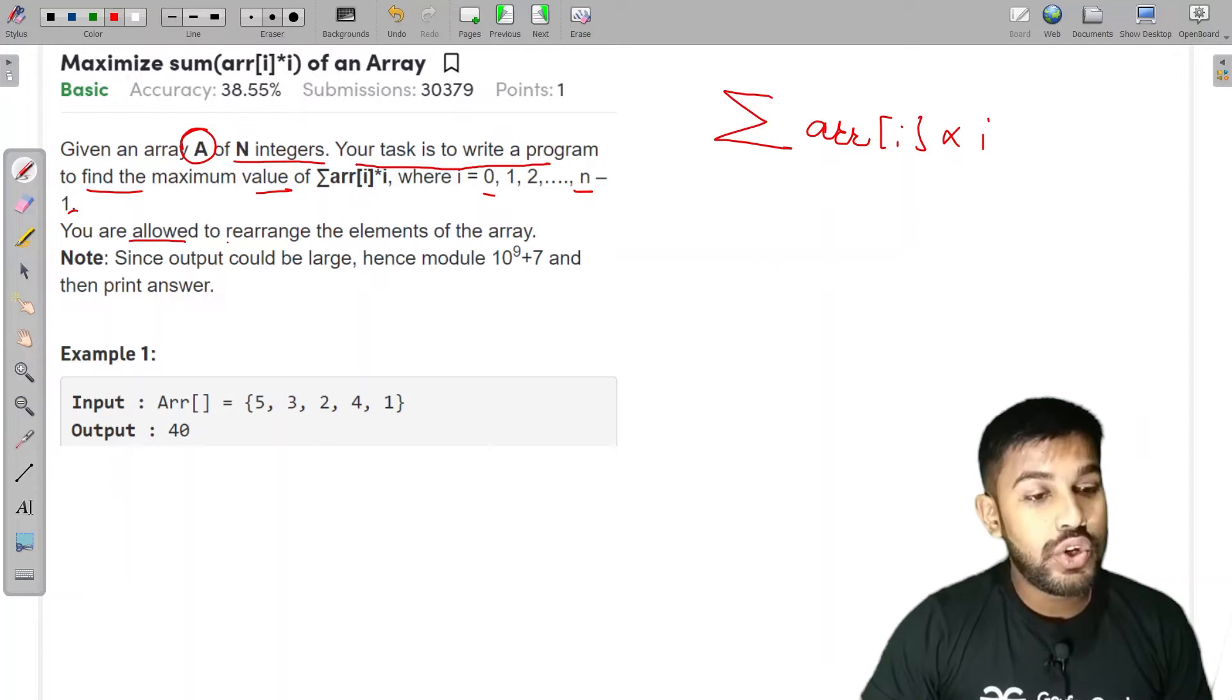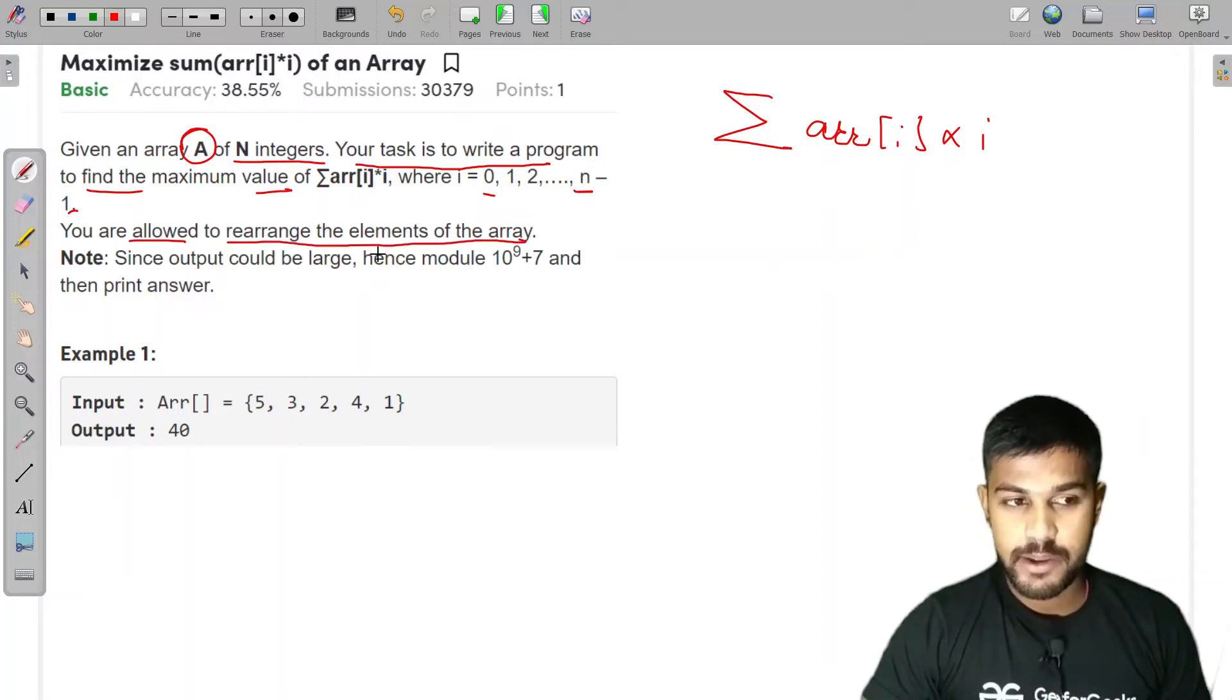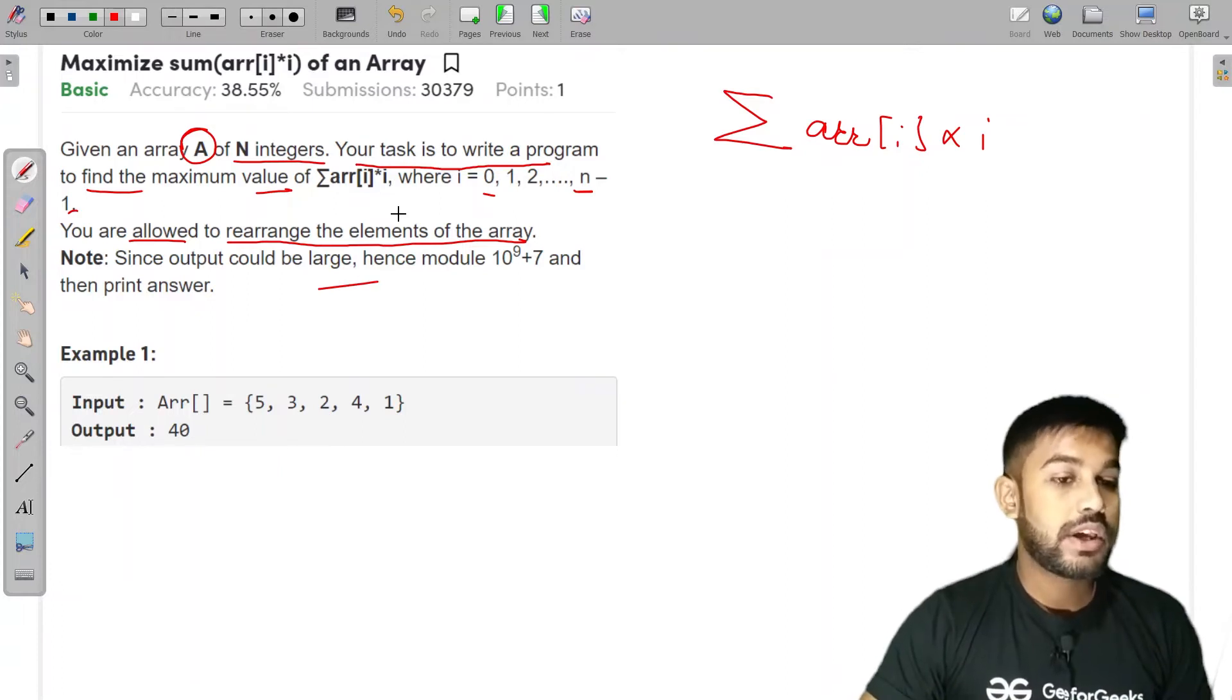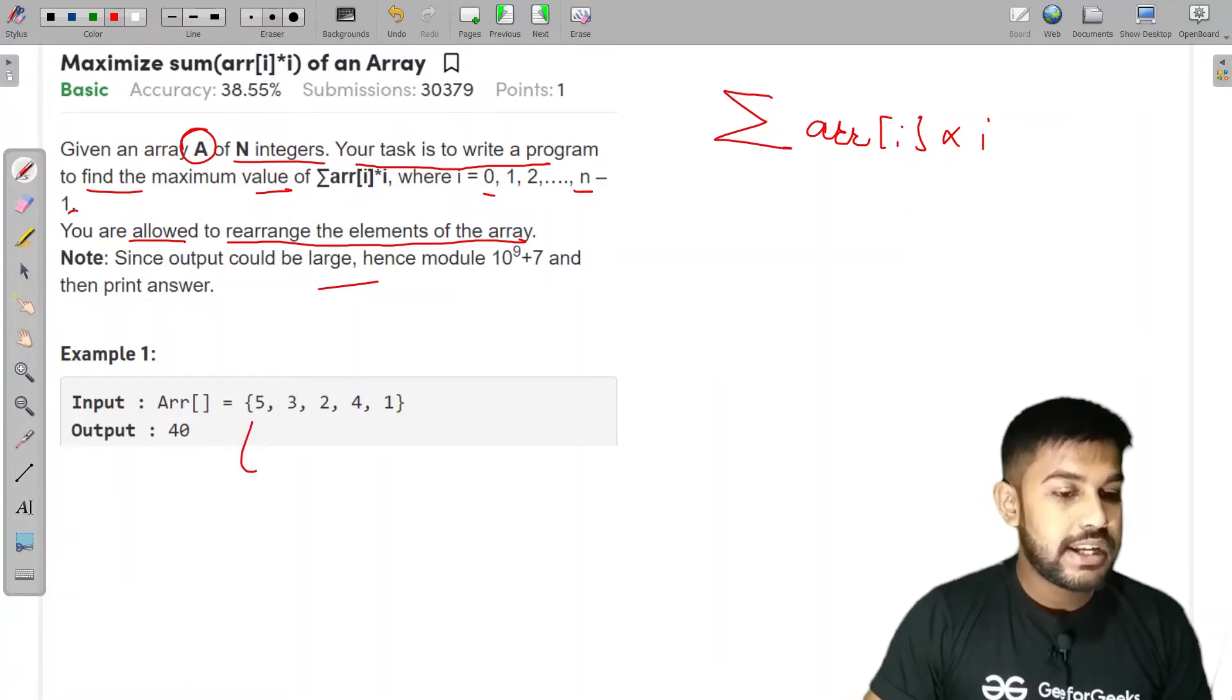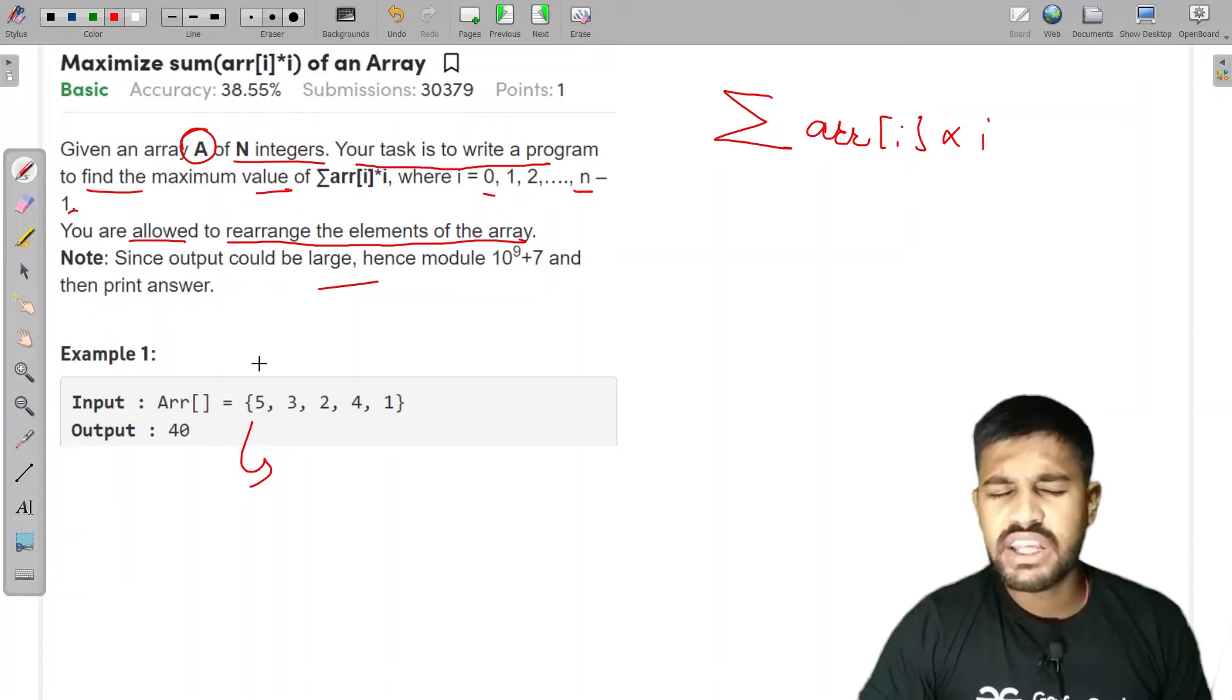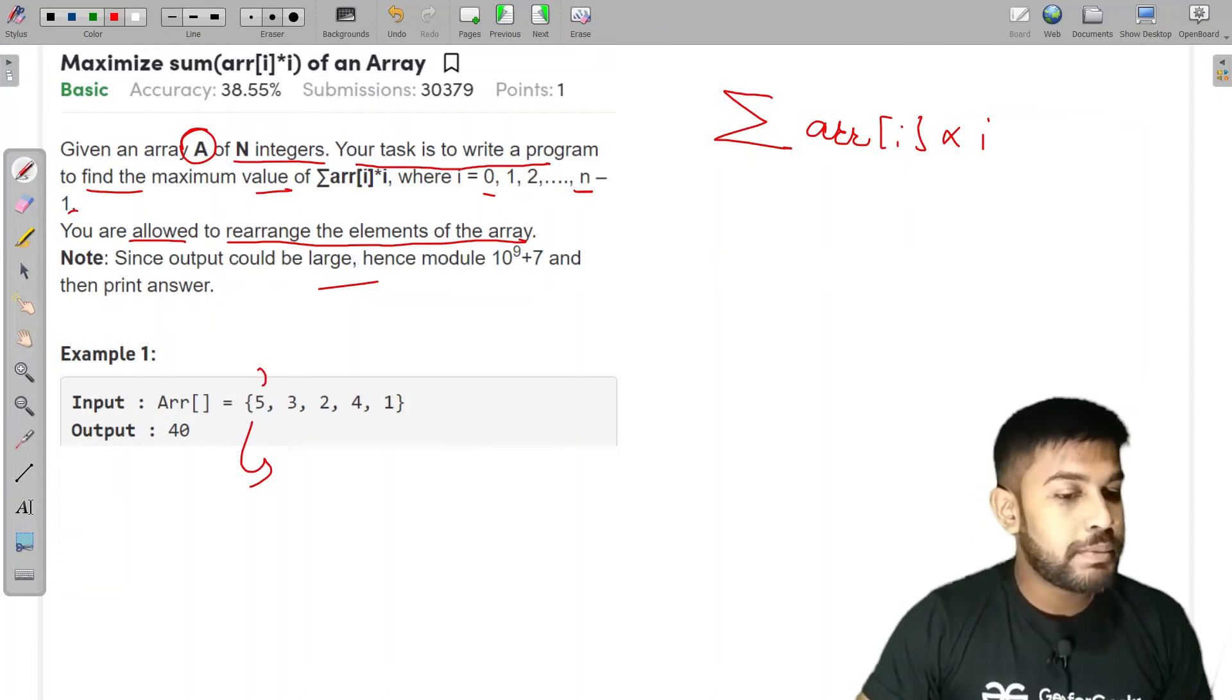You are allowed to rearrange the elements of the array. We would read about this note later. So your task is to maximize the value of ARR into i. First, let us take the value of this without any kind of rearrangement.